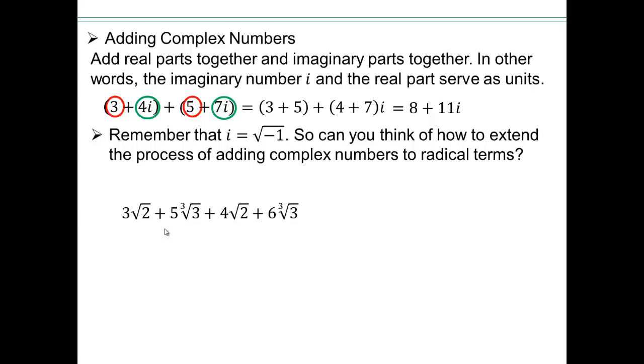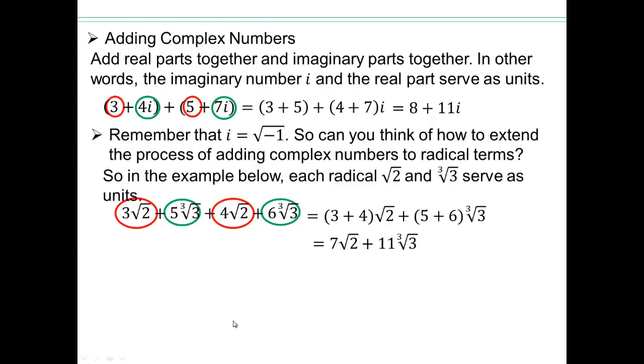So what do you think we should do? Add like terms. So let's just circle all the like terms. So we're saying that this and this is a like term. That and that is a like term. So add them together. So square root 2 is acting like our units. We have 3 square root 2's like 3 apples plus 4 apples. So we have 3 square root 2's and 4 square root 2's giving you 7 square root 2's. 5 cube root 3's and 6 cube root 3's giving you 11 cube root 3's. So square root 2 is serving as units. Or at least that's how you can think of it.